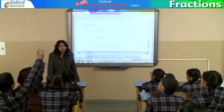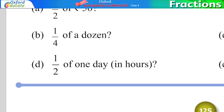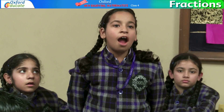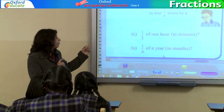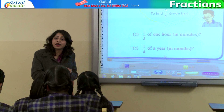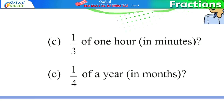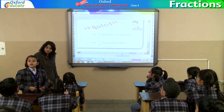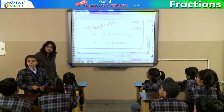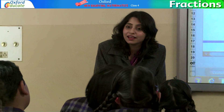How many hours do we have in a day? 24. Half of 1 day in hours? Yes, Tisha? 12 hours. 1 by 3 of 1 hour in minutes — you have to divide 60 by 3. So you will get? 1 by 4 of a year in months? 3 months, because 12 divided by 4 is 3.